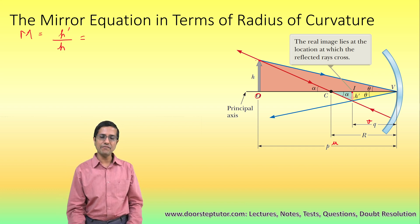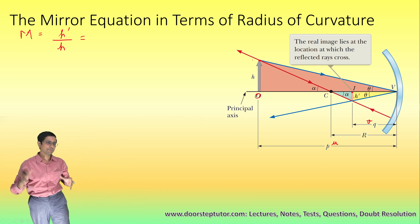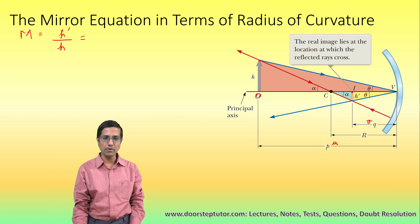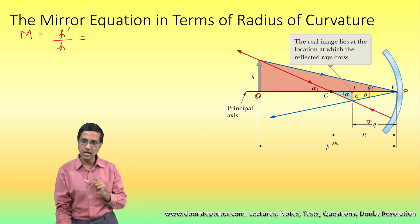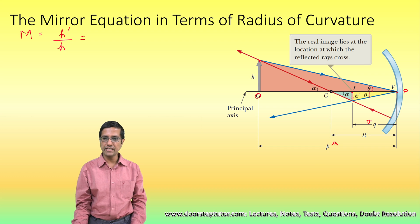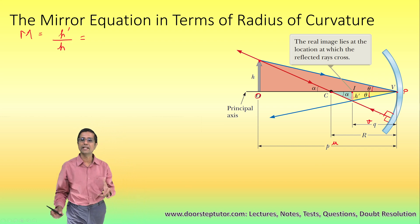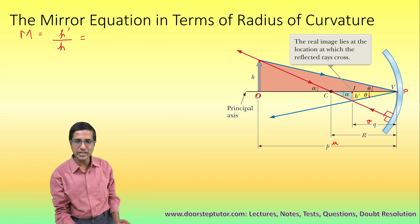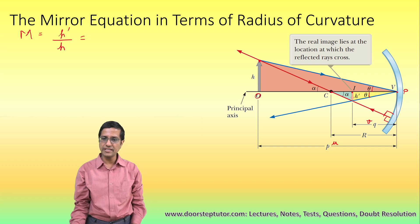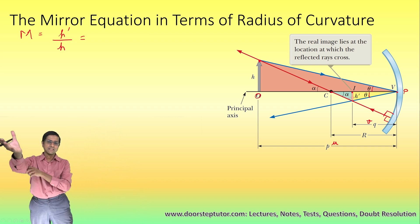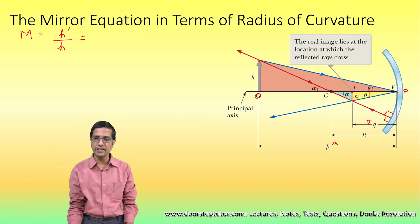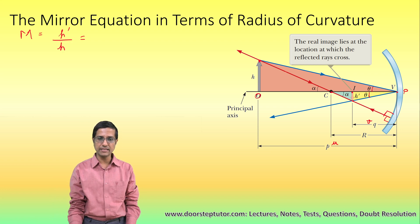We have done some ray tracing and taken two rays from the top of the object. The first ray strikes the pole of the mirror and reflects back at the same angle theta. The second ray goes through the center of curvature and strikes the mirror at 90 degrees, so it retraces its path. These two rays intersect at point I, which is our image, with height H dash.